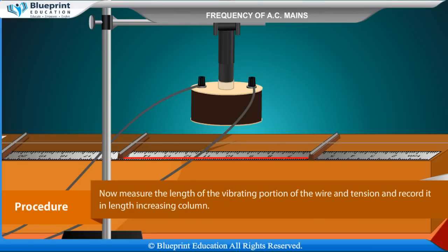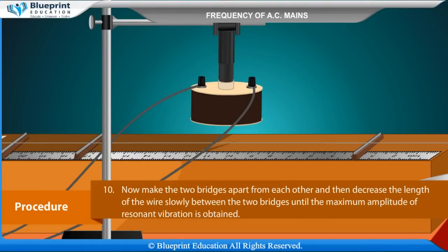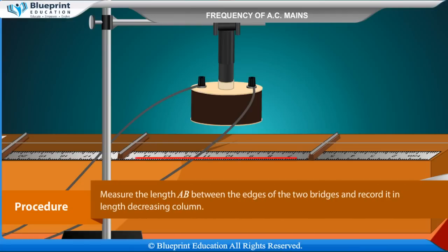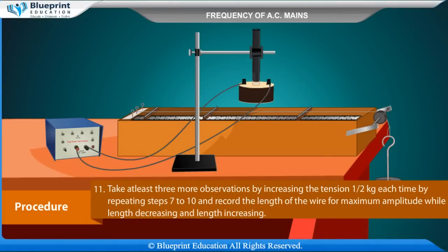Bring the two bridges closer and increase the length slowly until the maximum amplitude of resonant vibration is obtained. Measure the length of the vibrating portion and the tension, and record it in the length-increasing column. Then move the two bridges apart and decrease the length slowly between them until maximum amplitude of resonant vibration is obtained. Measure length AB and record it in the length-decreasing column. Take at least three more observations by increasing the tension by half kg each time.